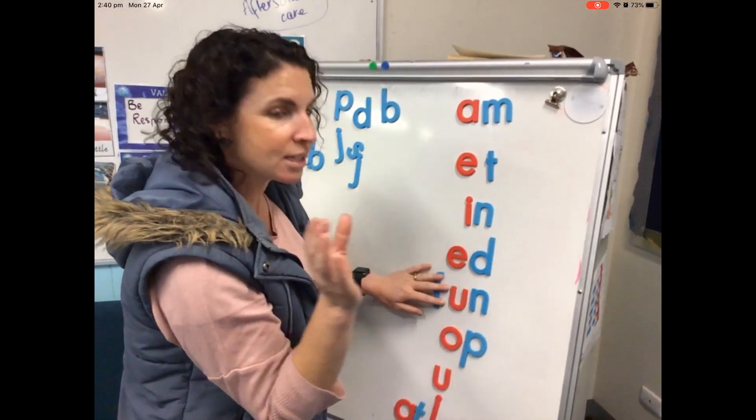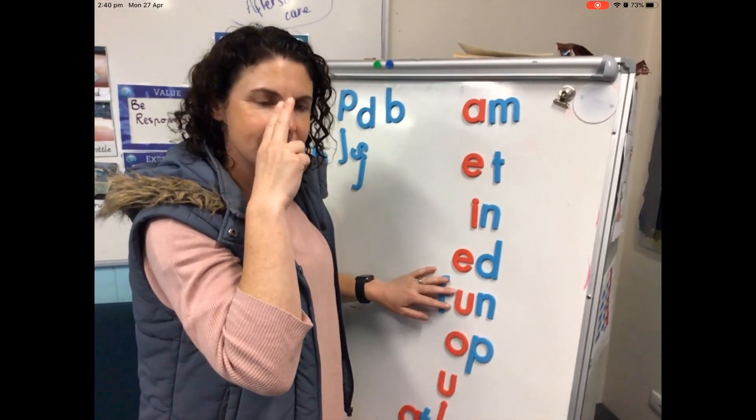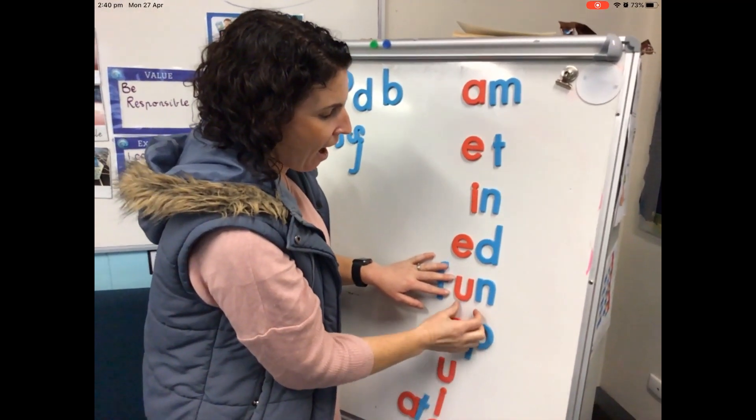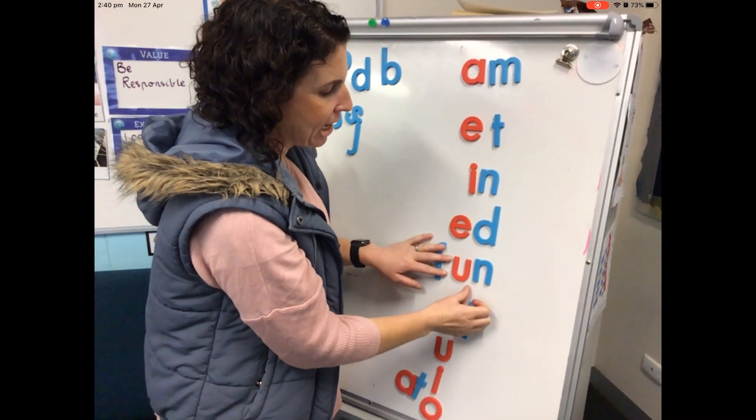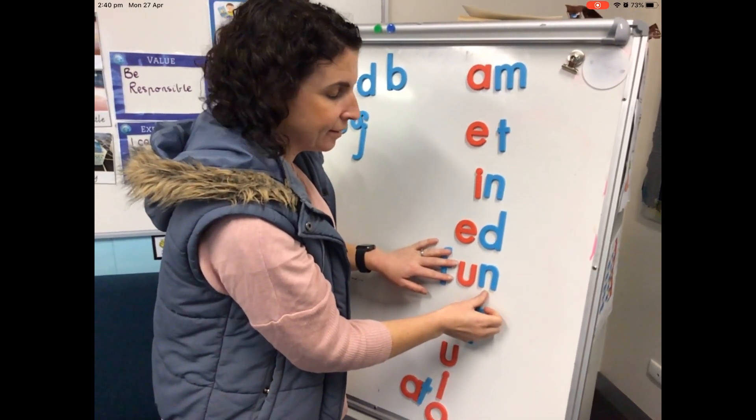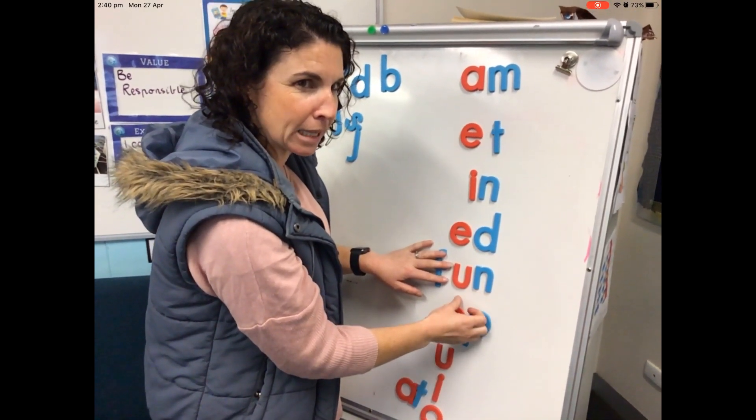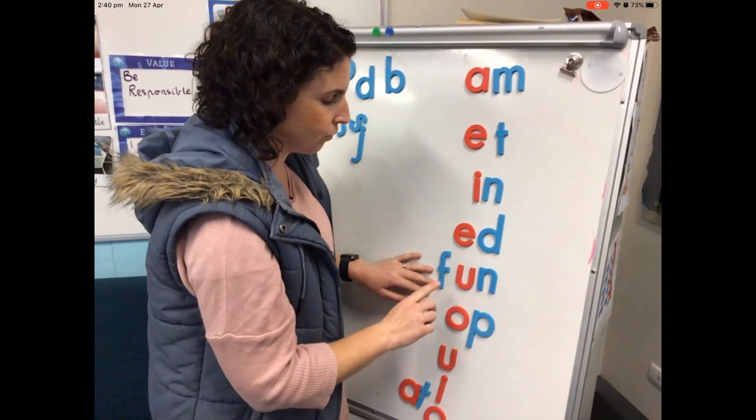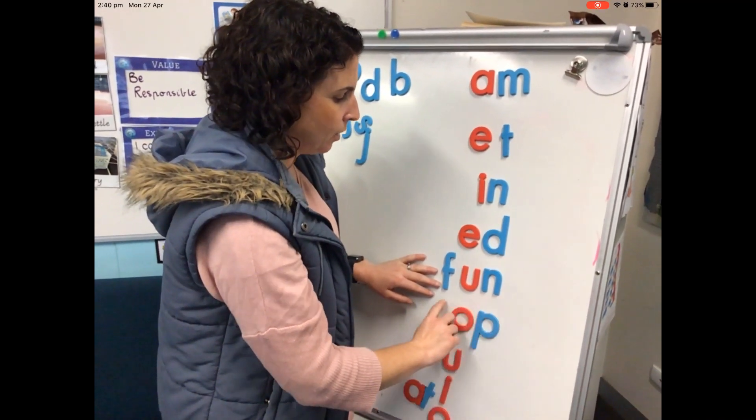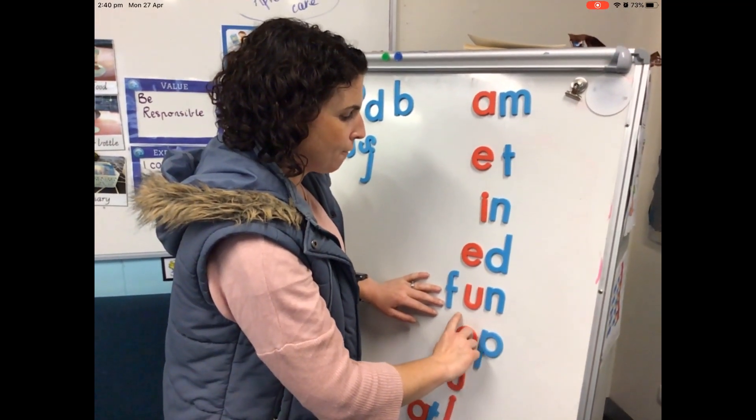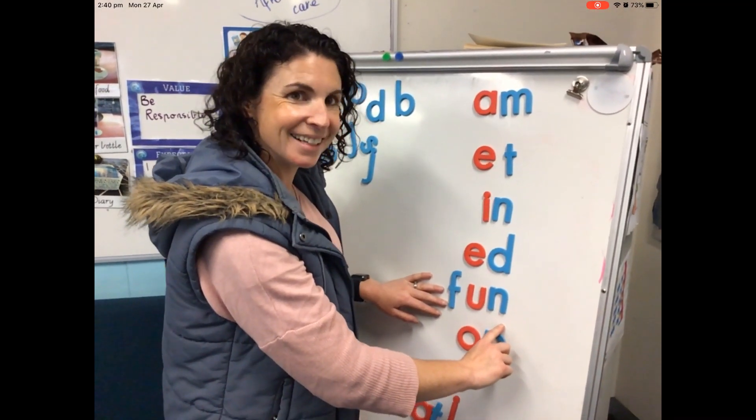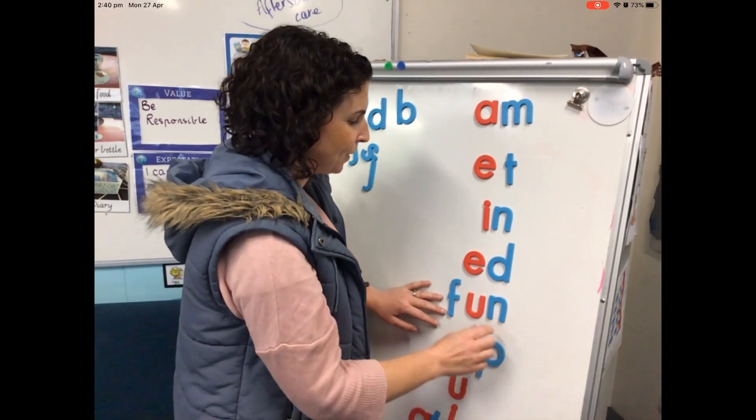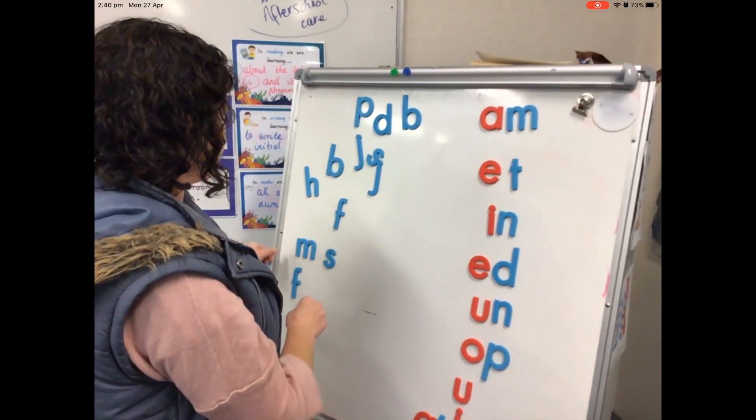Alright, we've got a different word family here. Now this one, we've got UN. So two sounds. U-N. UN. UN. UN. So that's our word family. The UN word family. Let me try and put the F in front. F-UN. F-UN. Fun. Can you hear it? It's the word fun. That's a real word.